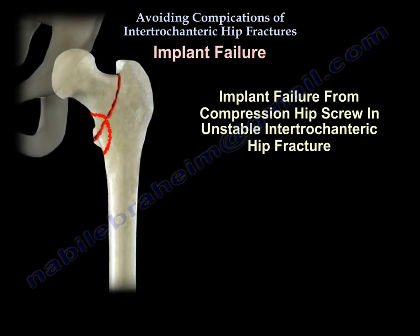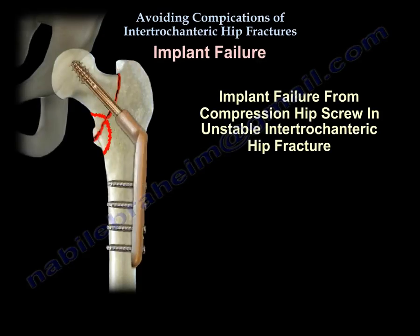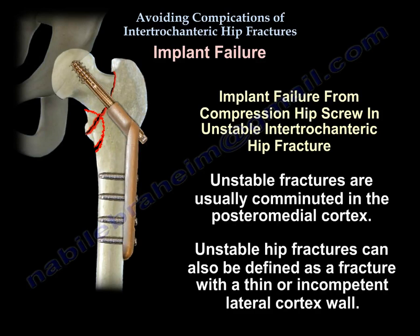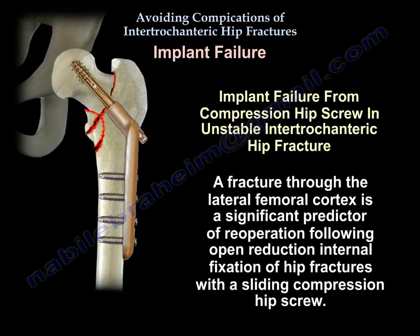Another cause of implant failure is the use of a compression hip screw in an unstable intertrochanteric hip fracture. Unstable fractures are usually comminuted in the posteromedial cortex. An unstable hip fracture can also be defined as a fracture with a thin or incompetent lateral cortex wall. Fracture through the lateral femoral cortex is a significant predictor of re-operation following open-reduction internal fixation with a sliding compression hip screw.